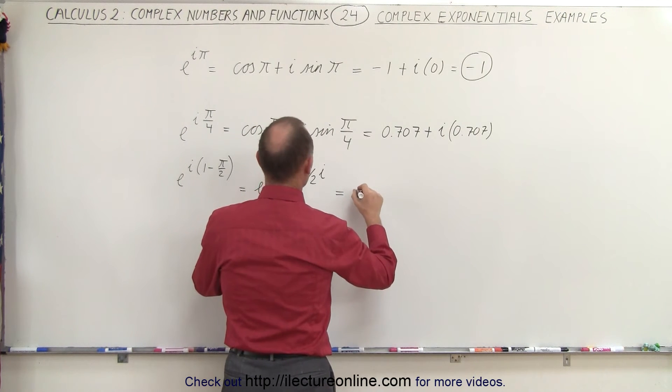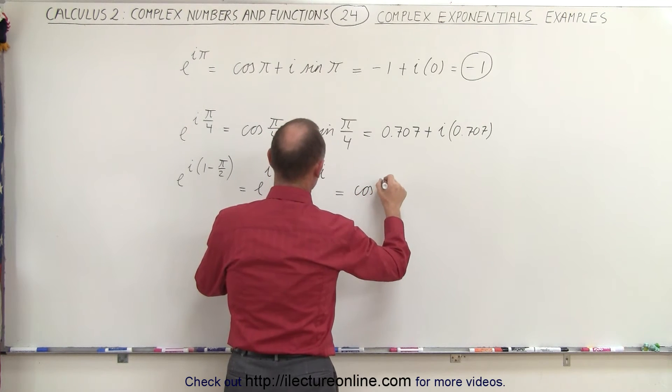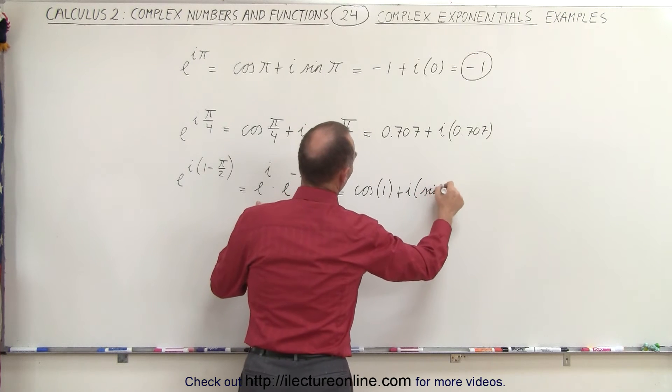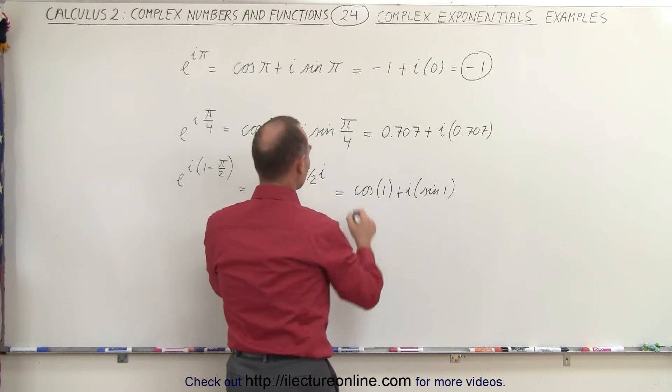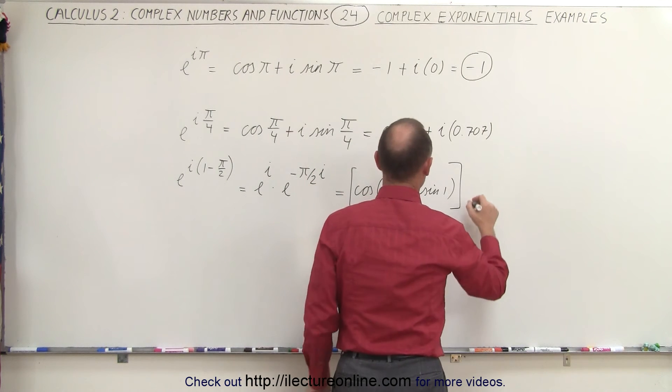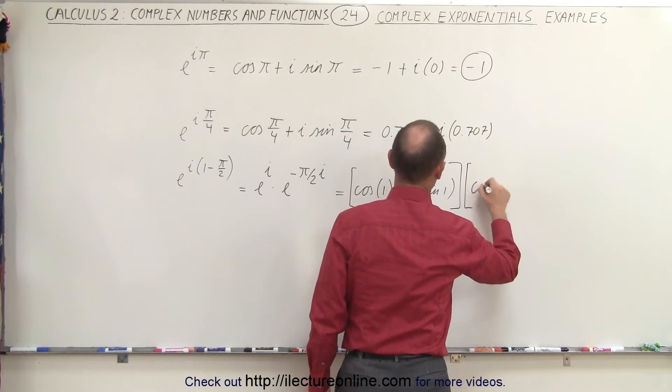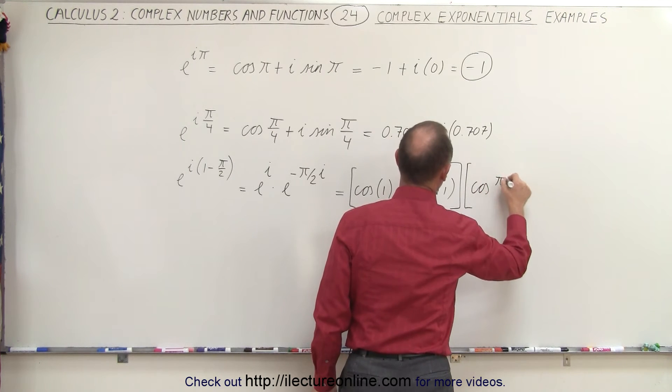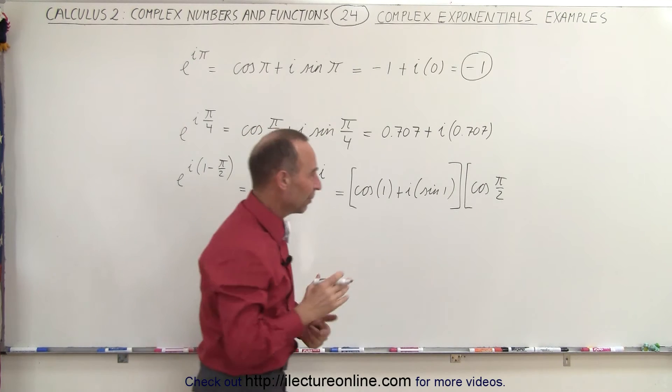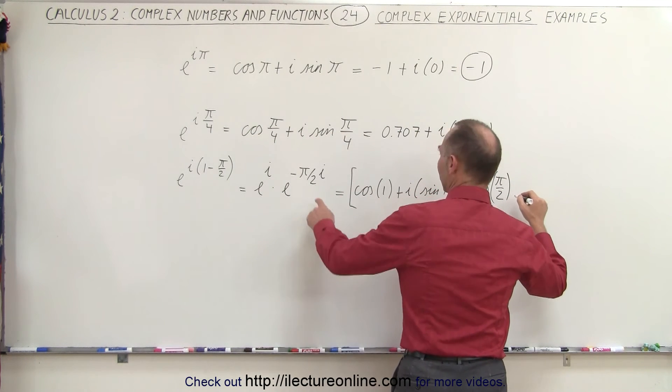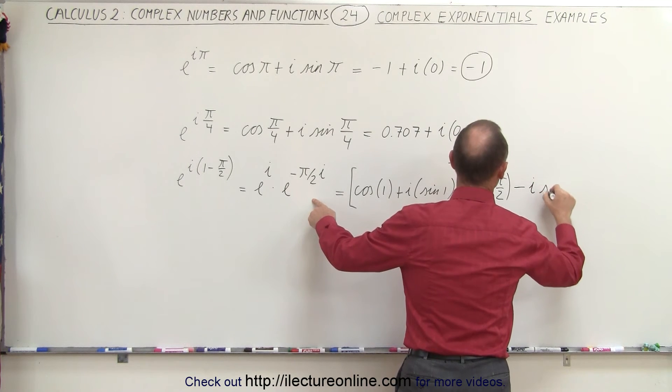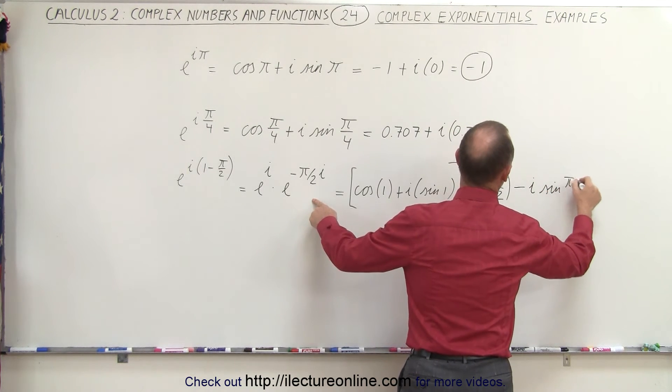that would be the cosine of one plus i times the sine of one and then multiply that times e to the minus pi over two. So that would be equal to the cosine of pi over two because the cosine of a negative angle is the same as the cosine of a positive angle like this. And then instead of having a plus here, we end up with a minus i times the sine of pi over two.